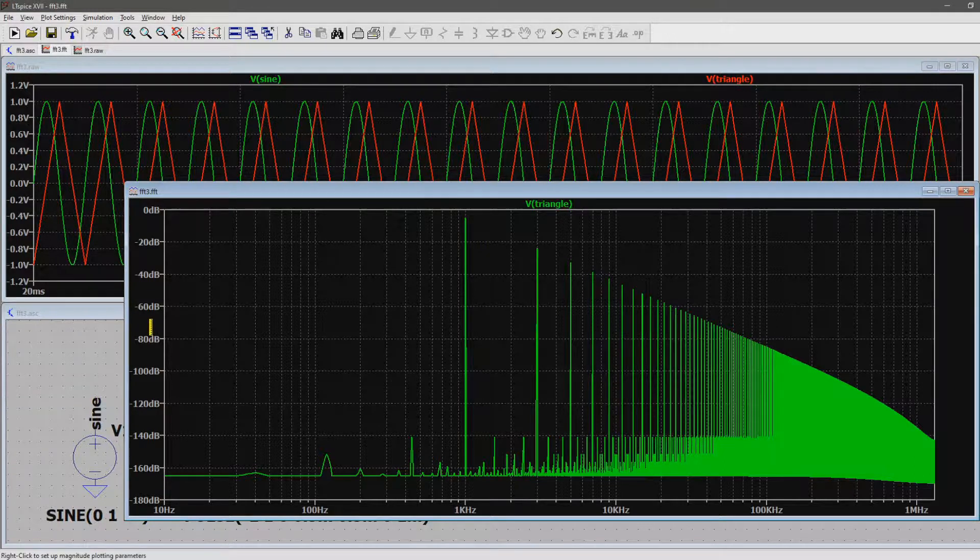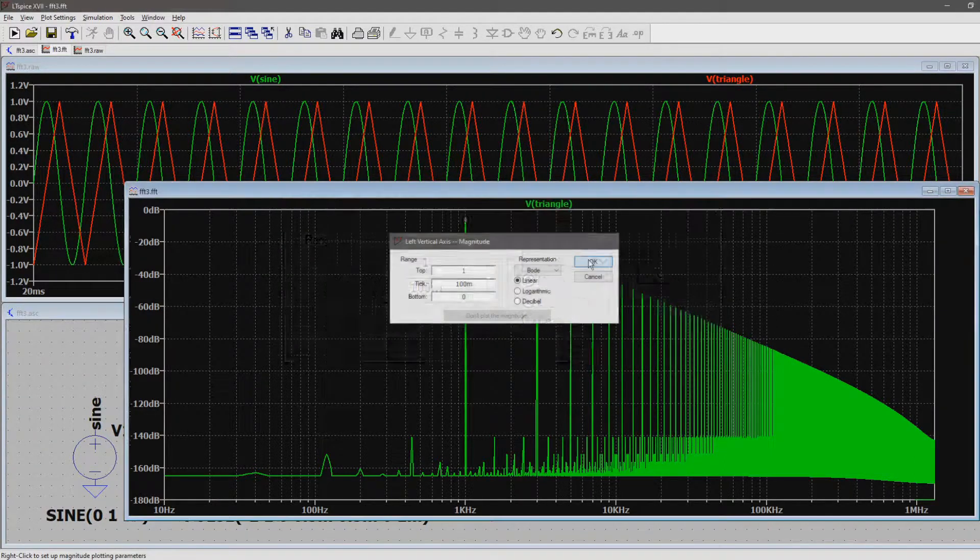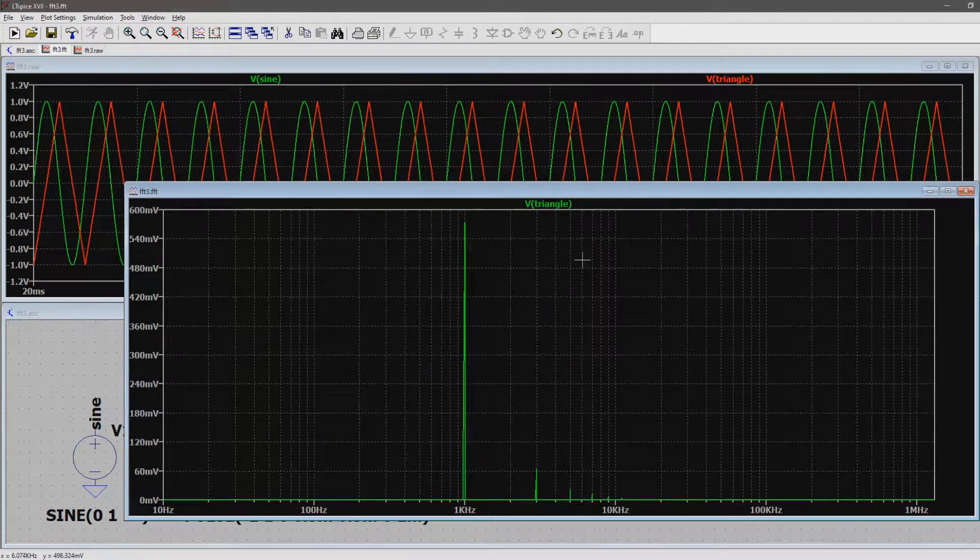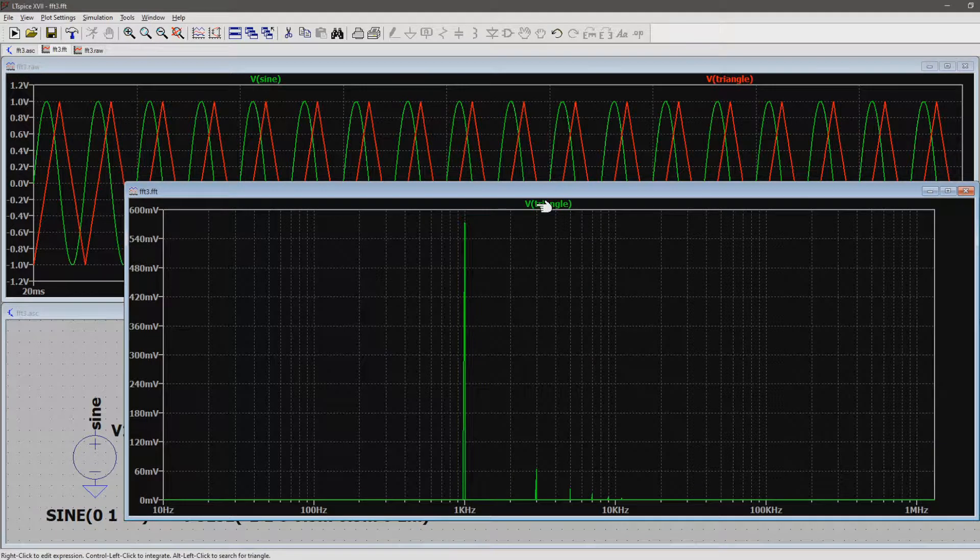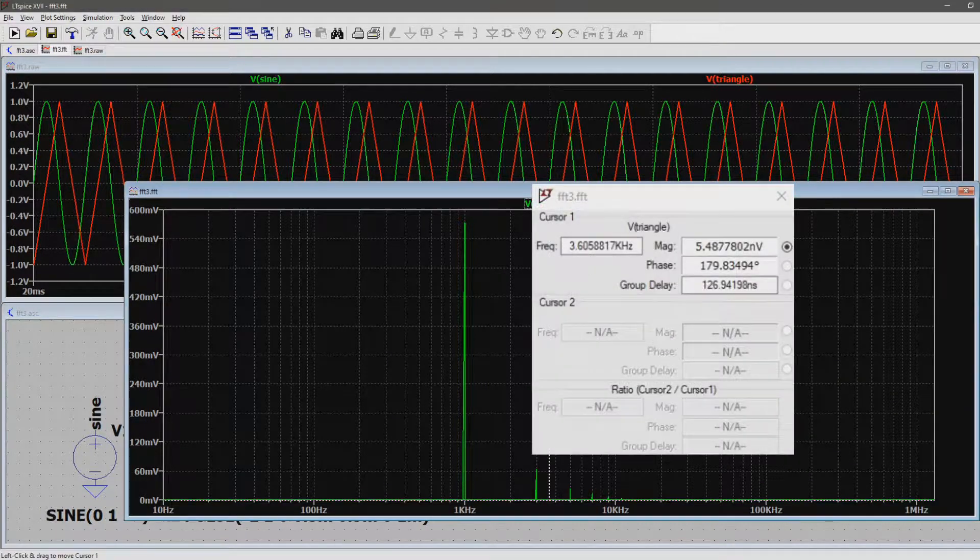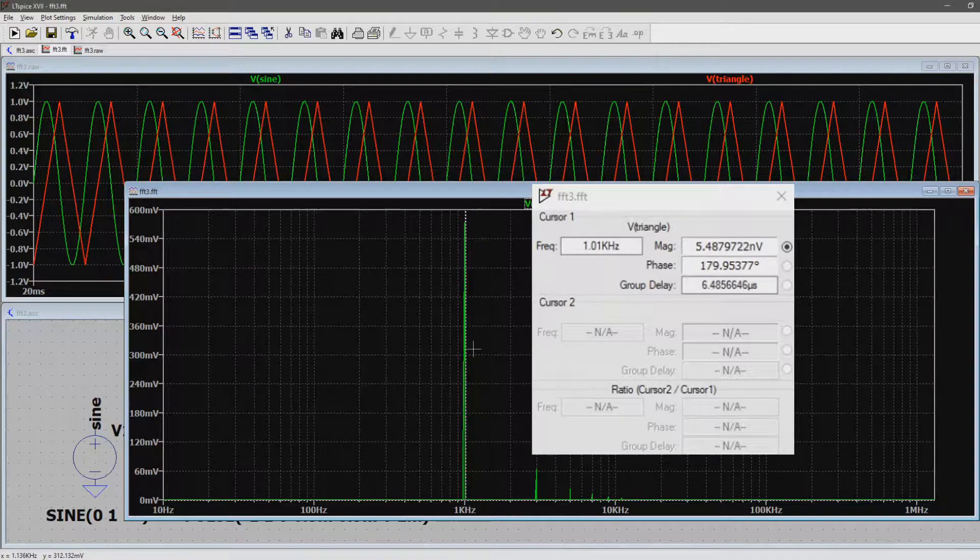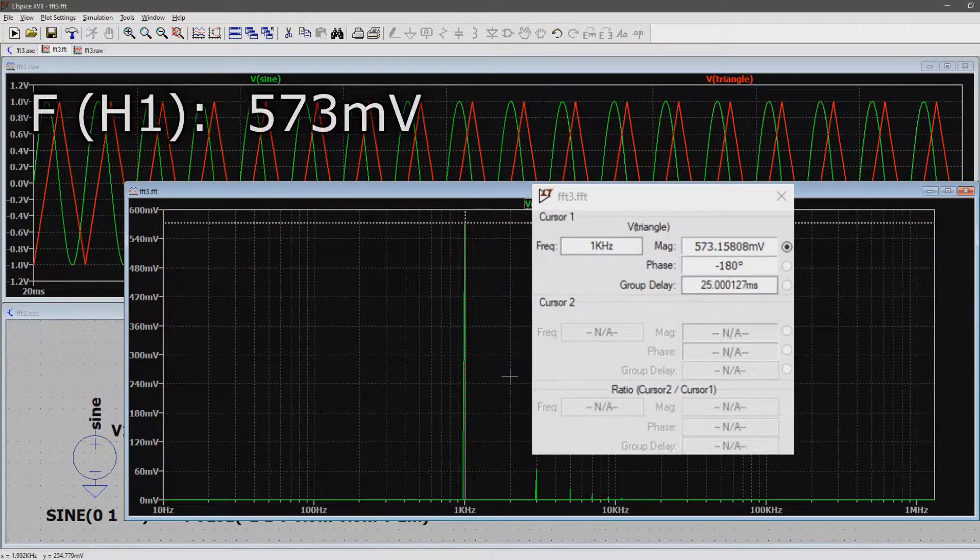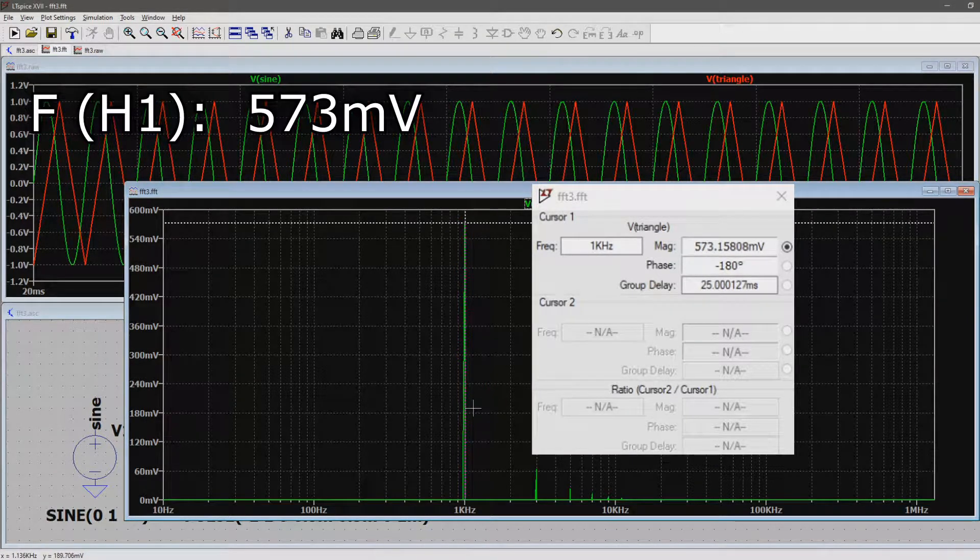Let's change the magnitude from decibel to linear. This shows the RMS voltage for each harmonic. Now let's go through the first 10 harmonics and note down what the RMS voltage is. The fundamental or first harmonic of 1kHz sits at 573mV RMS.